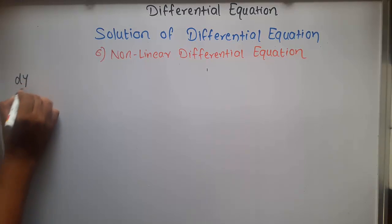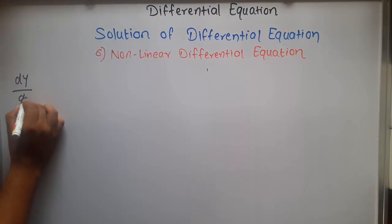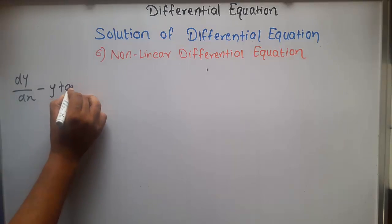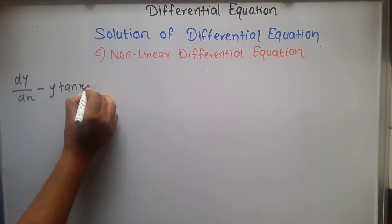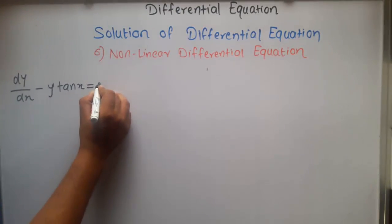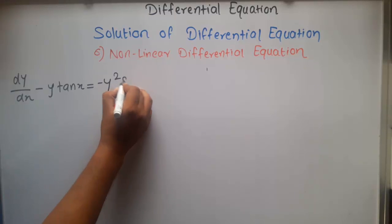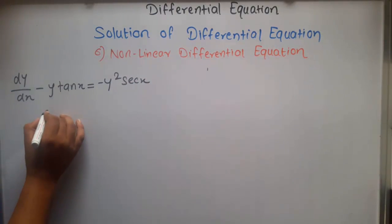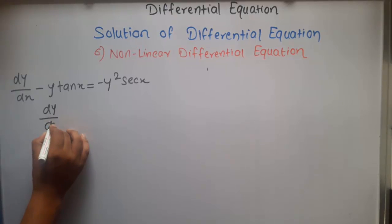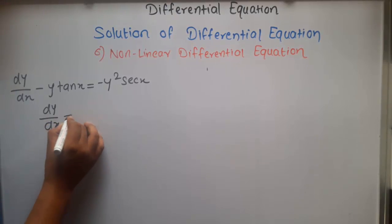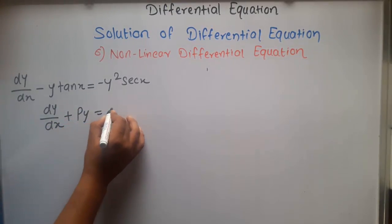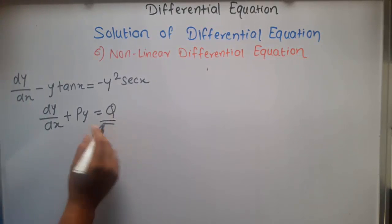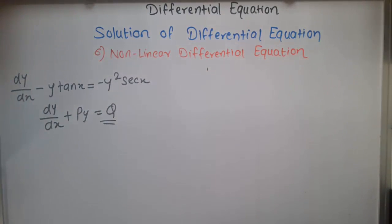We now solve with an example. Given: dy/dx - y·tan x = -y²·sec x. Comparing with the standard linear form dy/dx + Py = Q, this is not a linear differential equation because of the y² term.